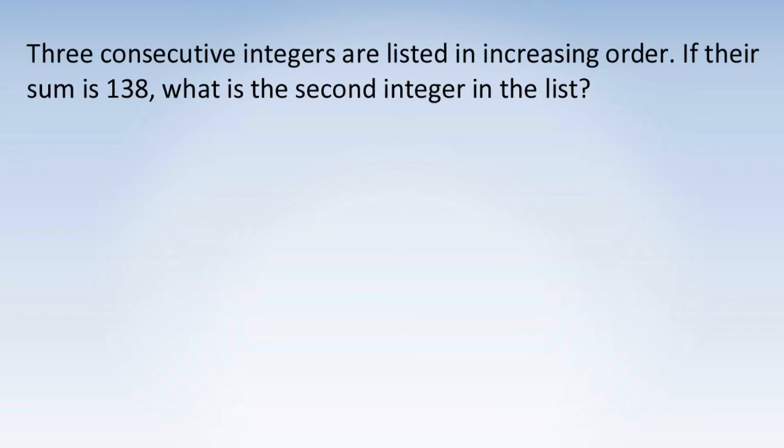Let's take a look at an SAT math problem where the strategy of starting with choice C can be used. Three consecutive integers are listed in increasing order. If their sum is 138, what is the second integer in the list?